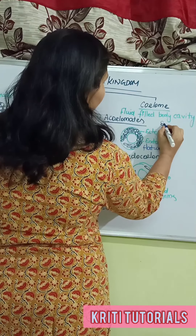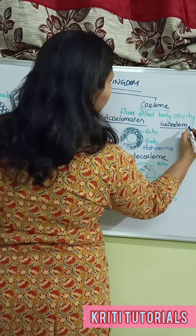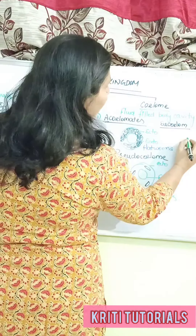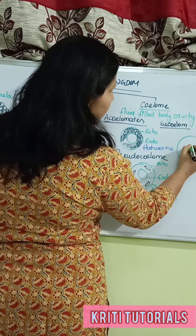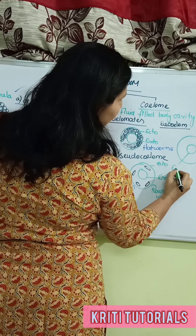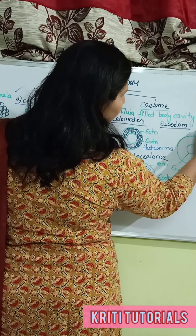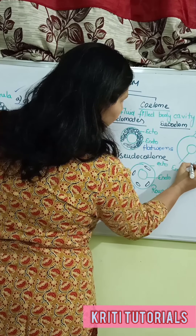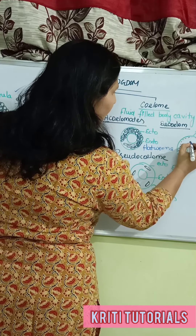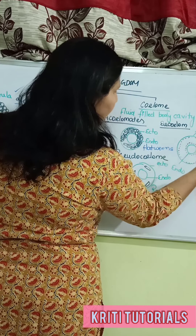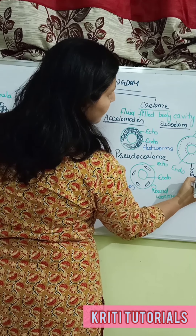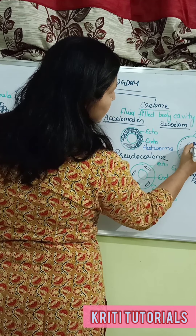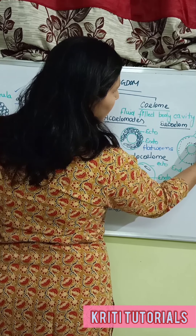The next type is eucoelomates. Eucoelomates are species which have a true coelom. They have peritoneal layers — the alimentary canal is lined by endoderm, and the outer ectoderm is present. The peritoneal layers present are the parietal peritoneum and the visceral peritoneum.